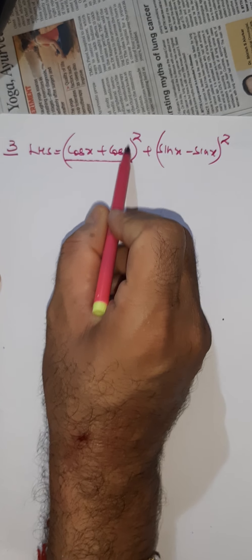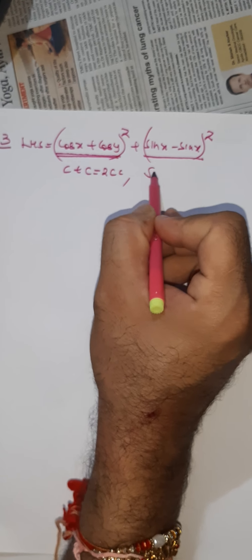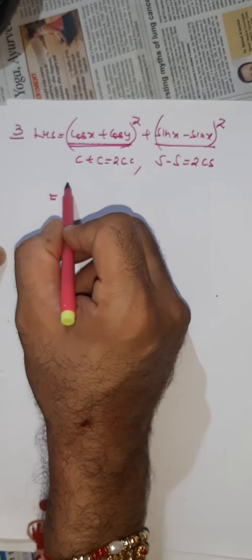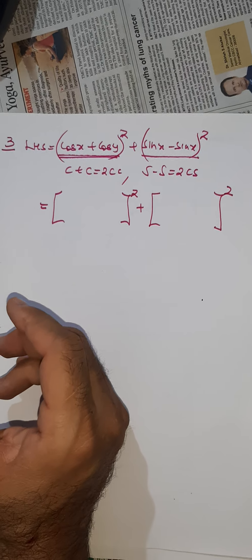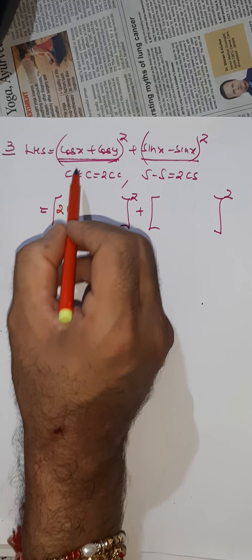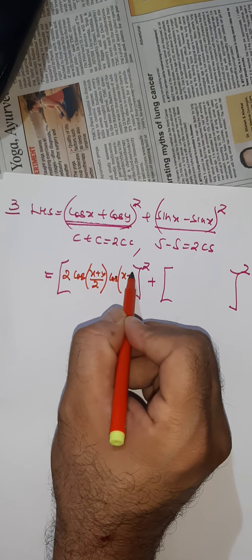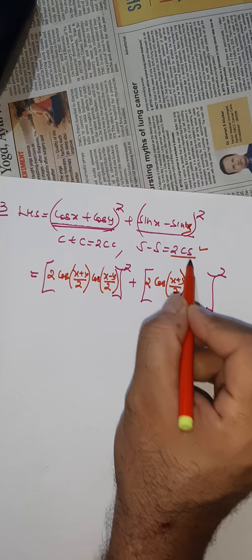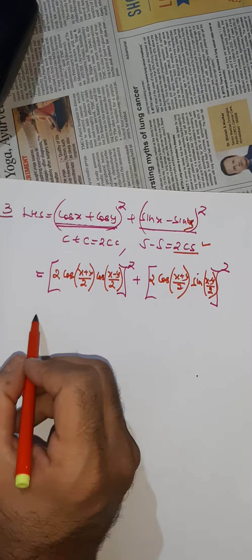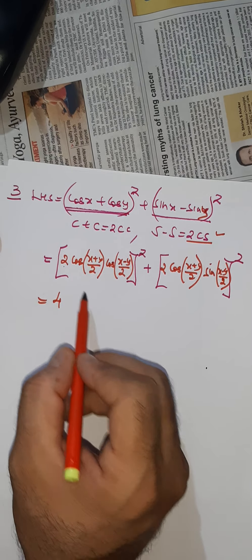Question three: we have the whole square plus the whole square. Here we use c+c = 2cc, and s−s = 2cs. Keeping the whole square as it is — c+c gives twice cosine((x+y)/2) into cosine((x−y)/2), and s−s gives twice cosine((x+y)/2) into sine((x−y)/2). The factor of 2 becomes 4 because of the whole square, and cosine((x+y)/2) is common.